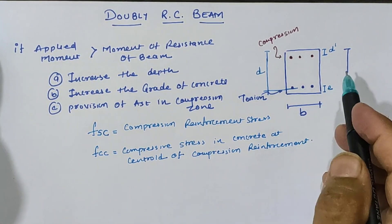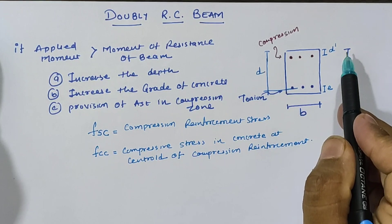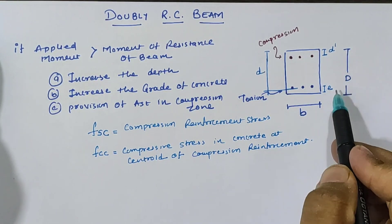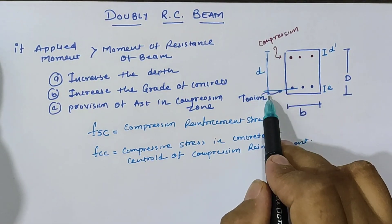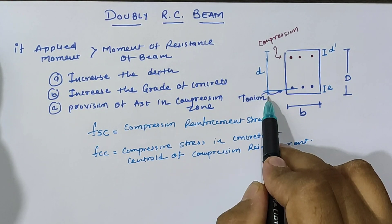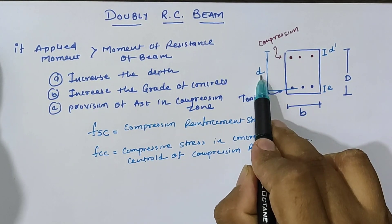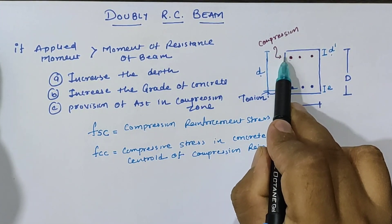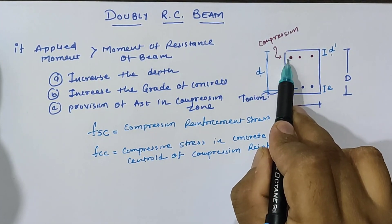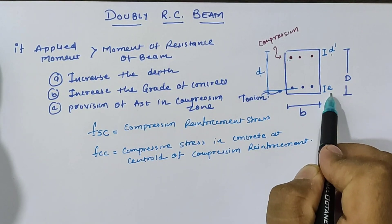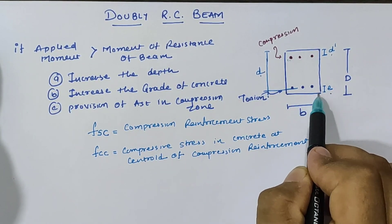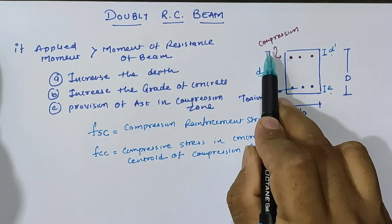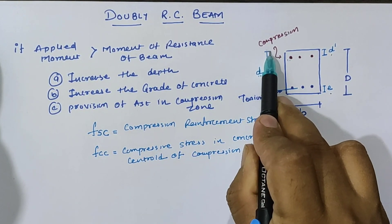Now the terminology used in analysis of doubly reinforced beam: d' is the effective cover of the compression zone reinforcement, e is the effective cover of reinforcement in tension zone, and d is the effective depth from the compression fiber to the center of the area of steel in the tension zone.